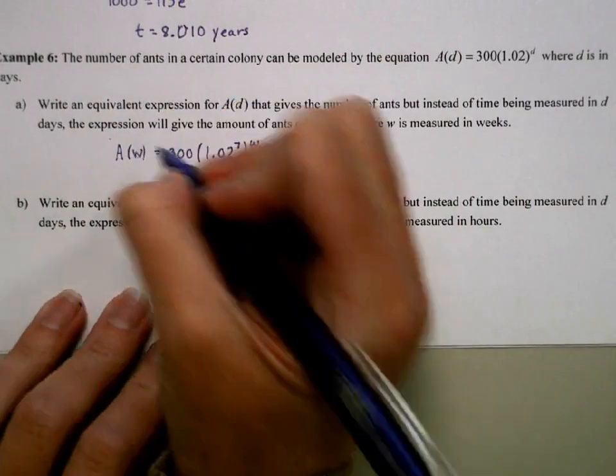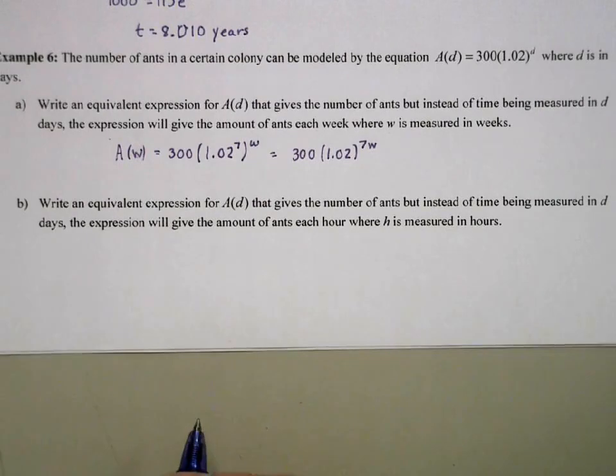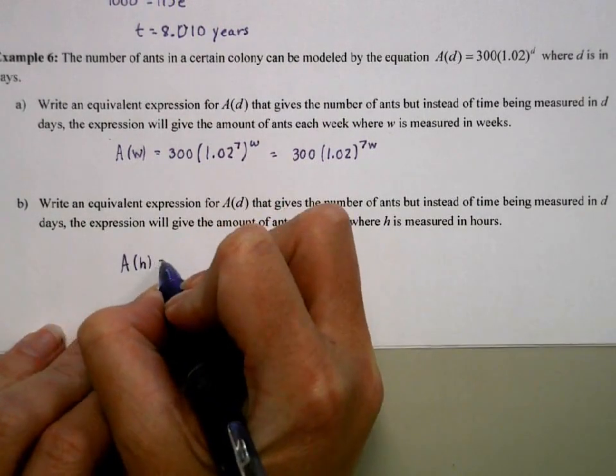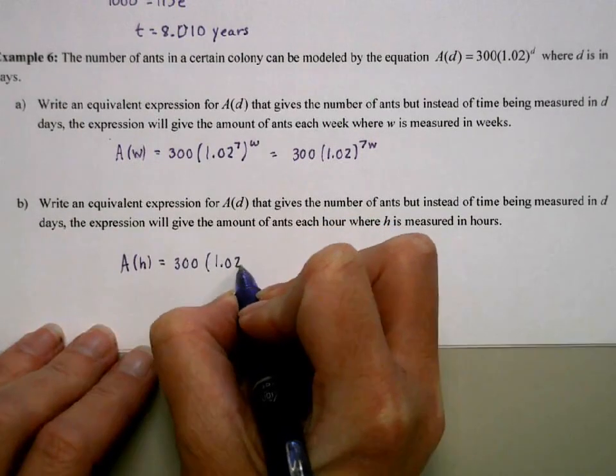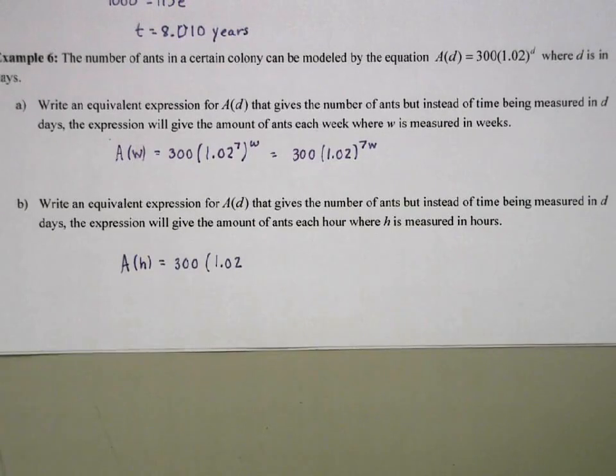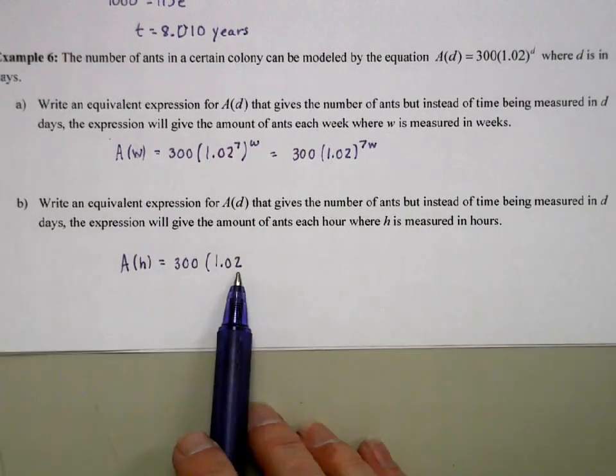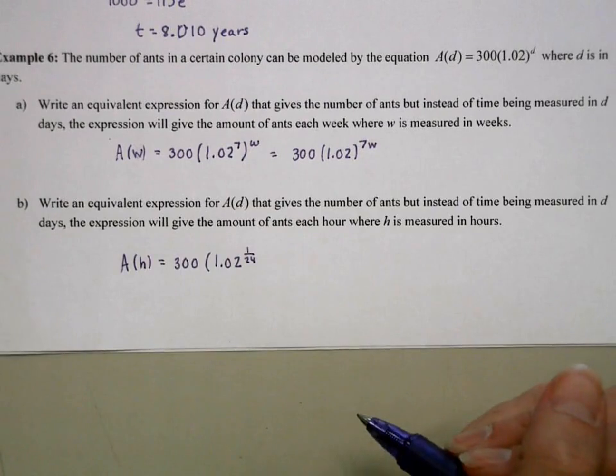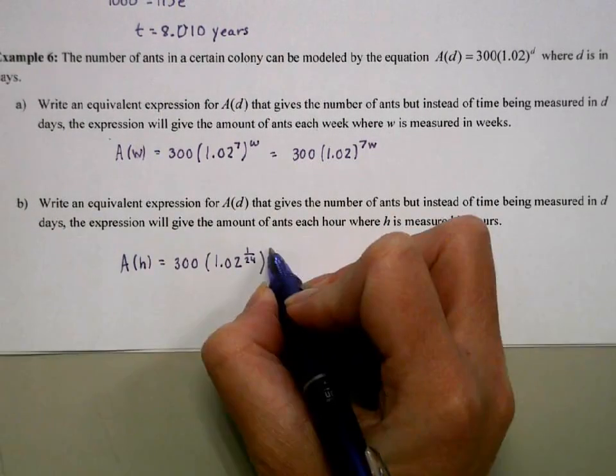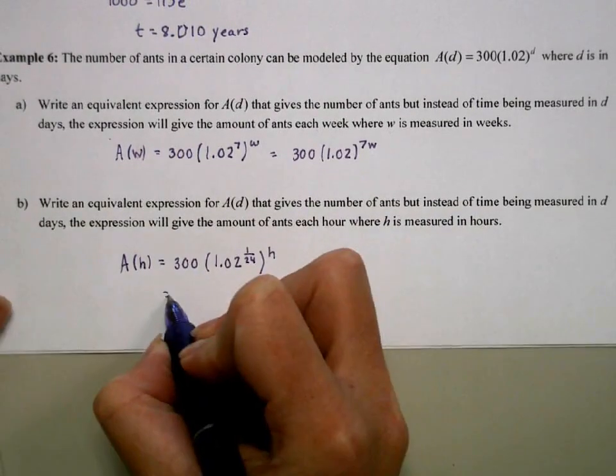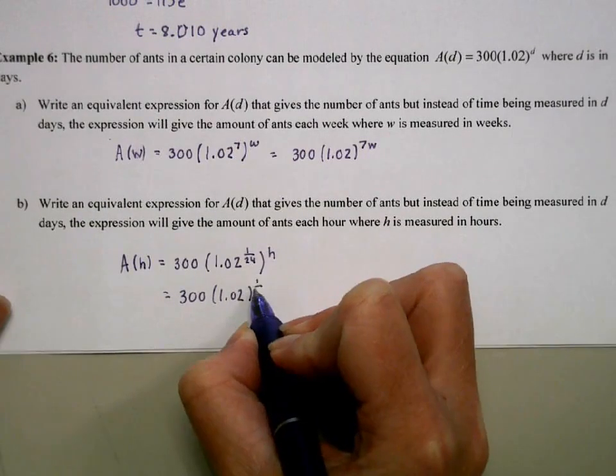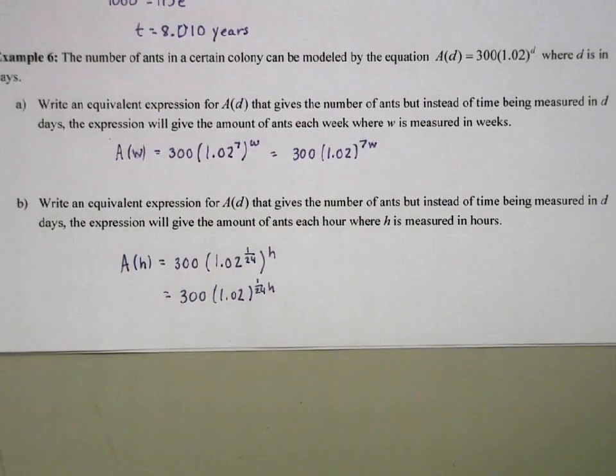Now we're going to write an equivalent expression for A(d) that gives the number of ants, but instead of days, we're going to do hours. So in one day, there are 24 hours. So how this is going to change the rate of growth, if it takes a whole day to have this 1.02, the fraction of that rate of growth is going to be 1 over 24. We're only going to do 1 over 24 of that for each hour. And then my h is going to be in hours. So we can rewrite this one as 300 times (1.02)^(1/24 * h). So those are just ways that we can readjust equations by adjusting the growth factor to match our units of time.